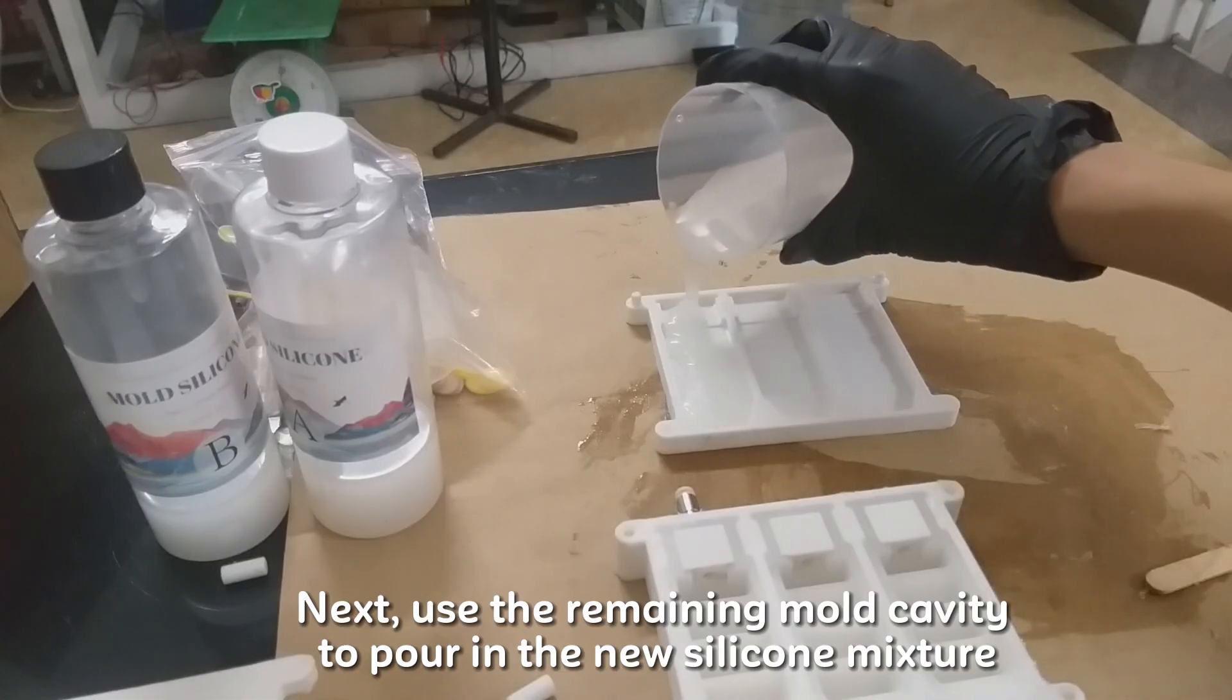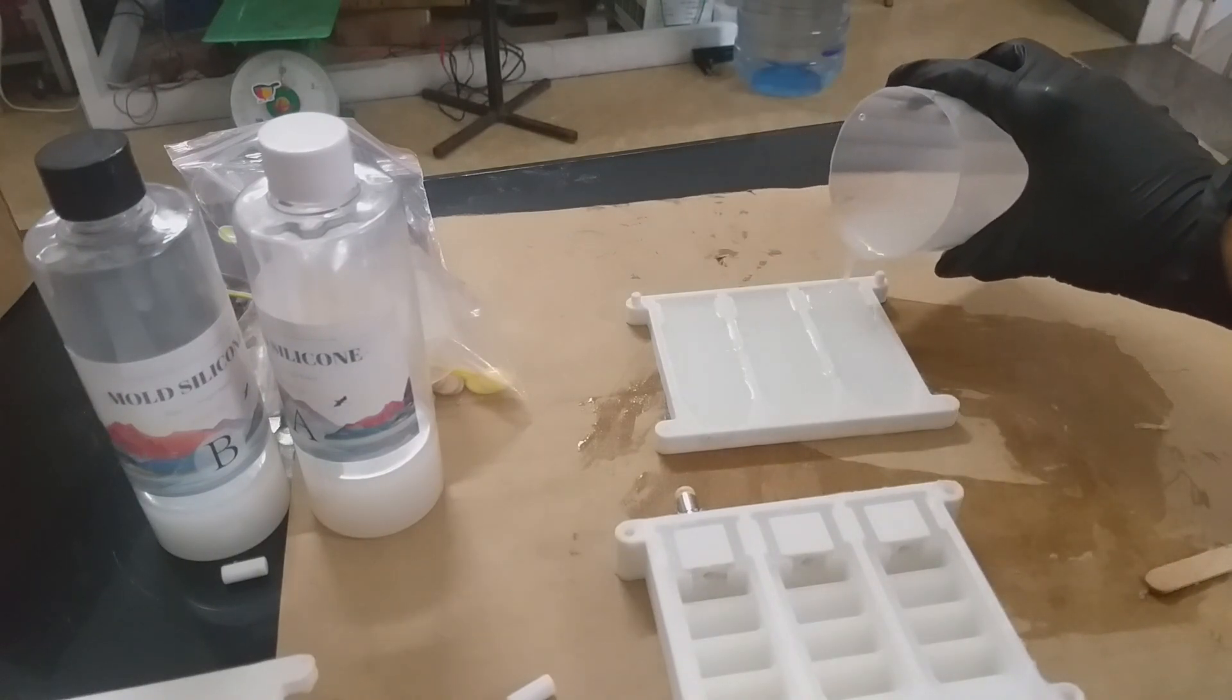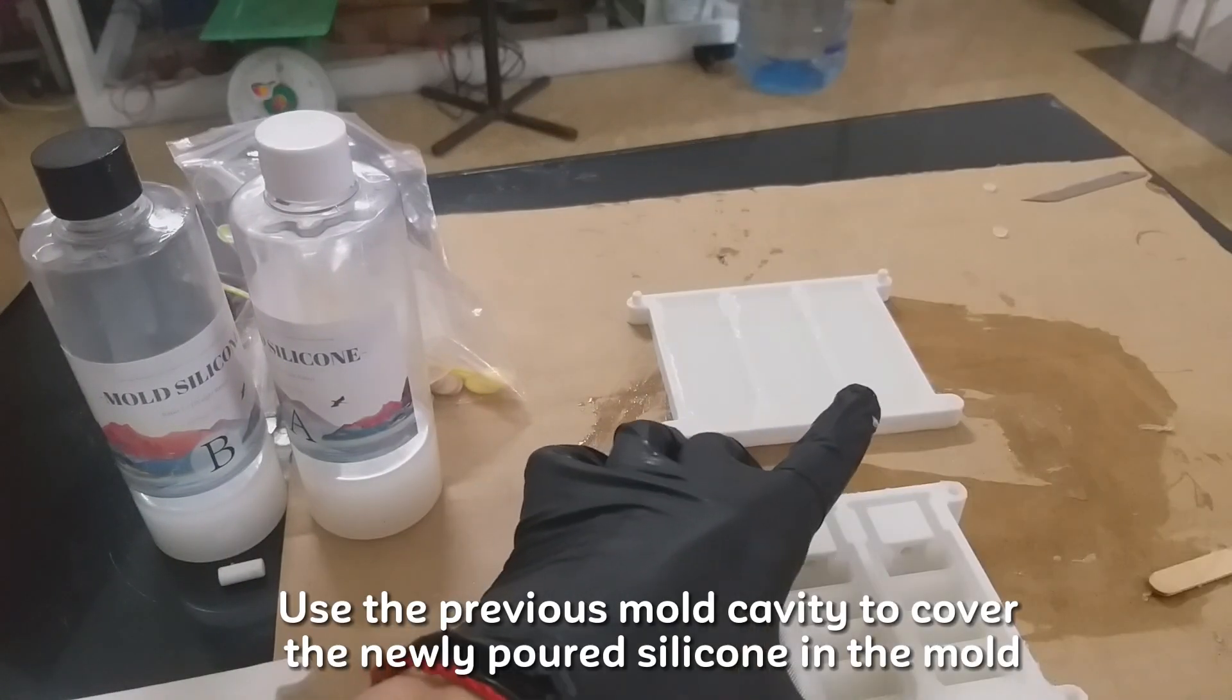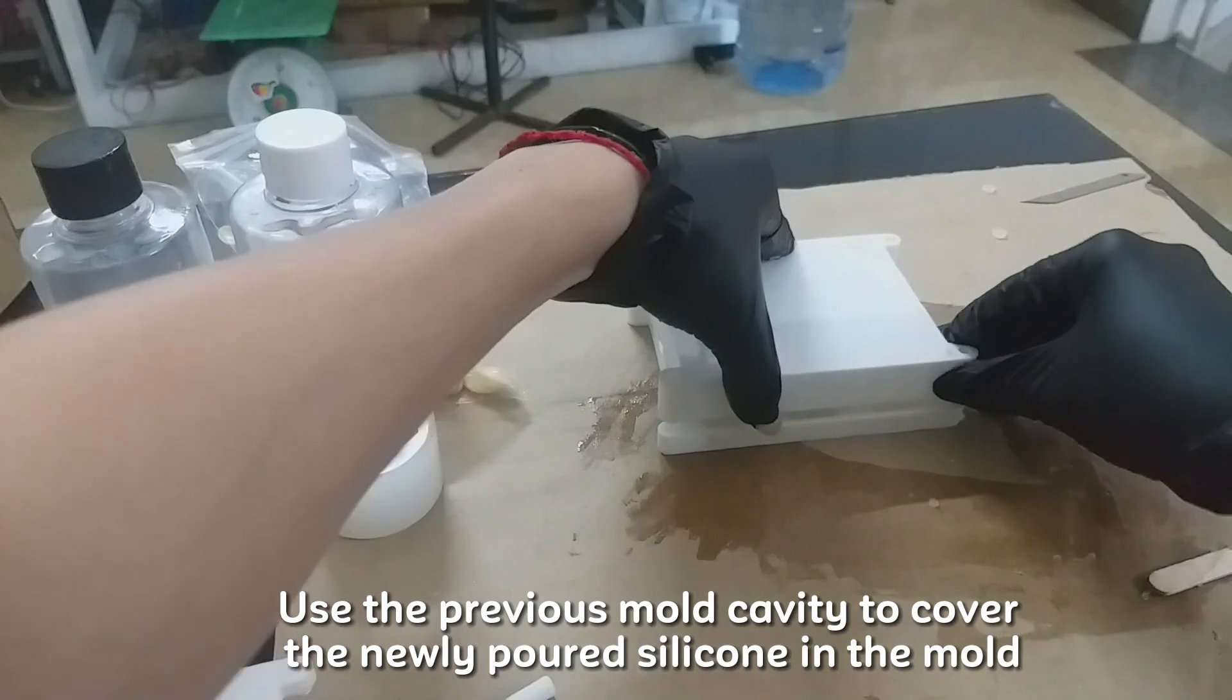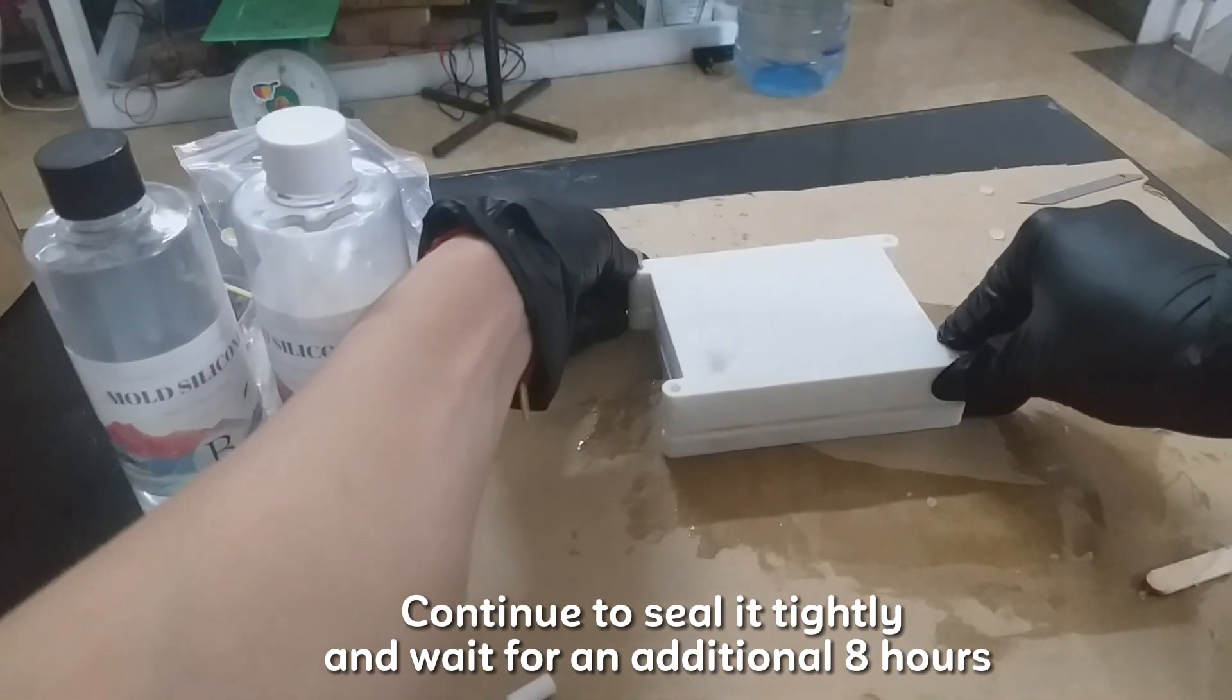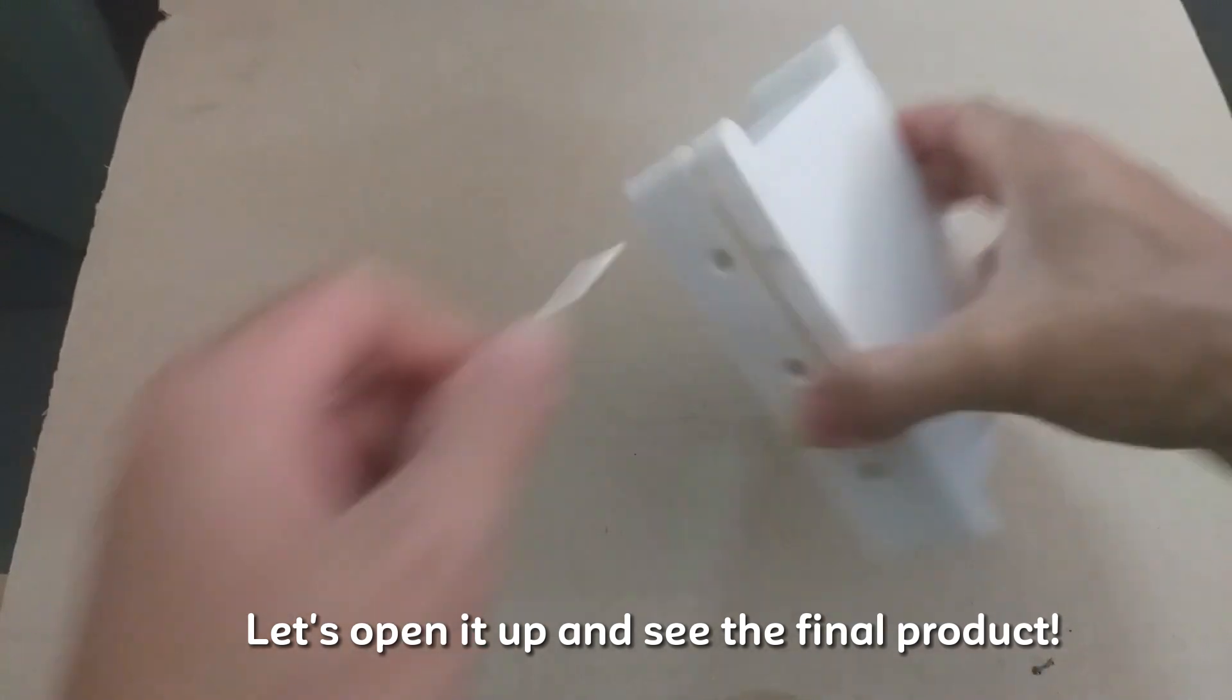Next, use the remaining mold cavity to pour in the new silicone mixture. Use the previous mold cavity to cover the newly poured silicone in the mold. Continue to seal it tightly and wait for an additional 8 hours. Let's open it up and see the final product.